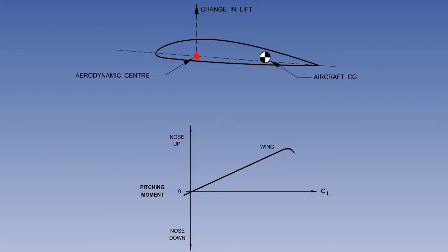The contribution of the wing has already been explained in previous lessons. To remind you, the wing is destabilising because the aerodynamic centre is forward of the aircraft CG.